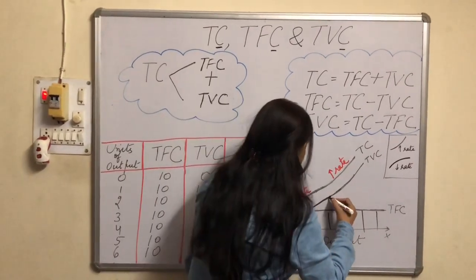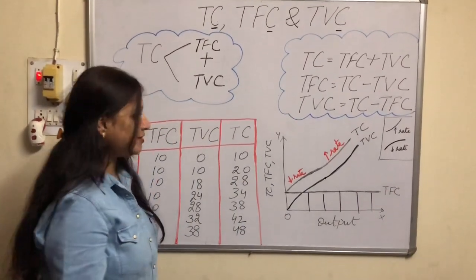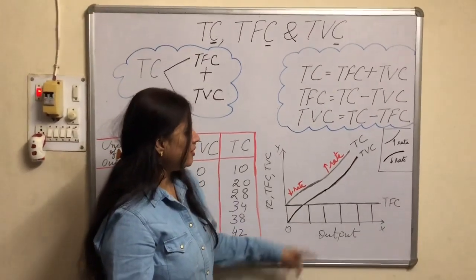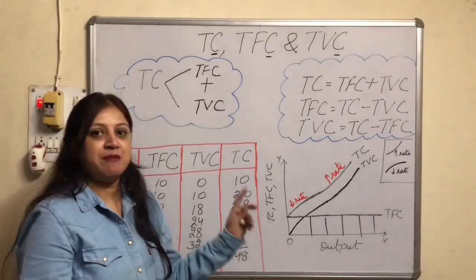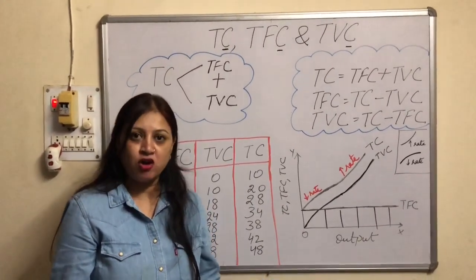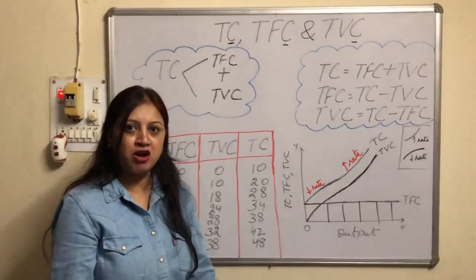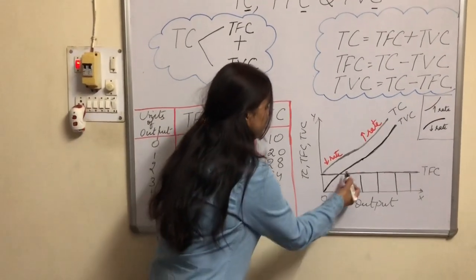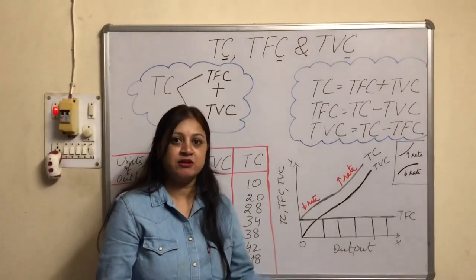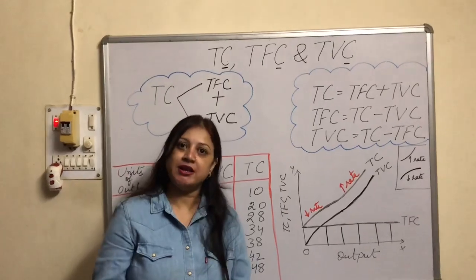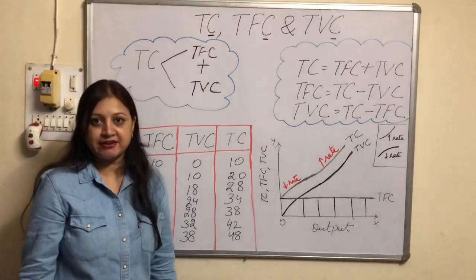Till this point it is increasing at a diminishing rate, and after that it is increasing at an increasing rate. This happens because MC is the rate of TVC, and MP and MC are opposite to each other. In the law of variable proportions, in the first stage MP used to increase so MC will fall, and if MC is falling then TVC will increase at a diminishing rate. After that it increases at an increasing rate.